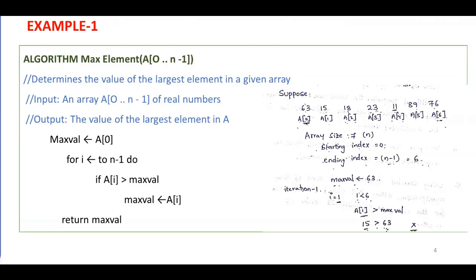We need not compare the same element with itself. The rest of the elements from the array are compared with the max value — a[1], a[2], a[3] and so on up to a[n-1]. If a[i] is greater than the max value, we assign that element to the max value. At last, the algorithm returns the max value.